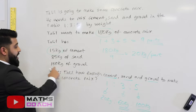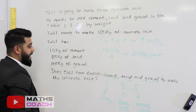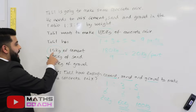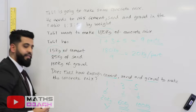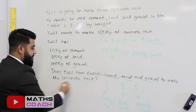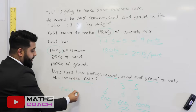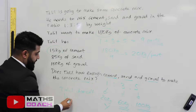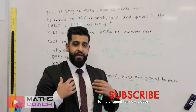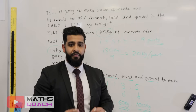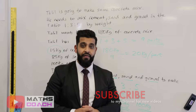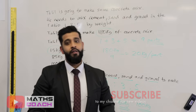He has 85 kg of sand — that's enough. He has exactly 100 kg of gravel — just enough. However, he needs 20 kg of cement but only has 15 kg, so he does not have enough cement. Therefore Talil cannot make the concrete mix. Thank you for watching — if you liked the video please give it a thumbs up, subscribe, and comment below with any topics you'd like covered.